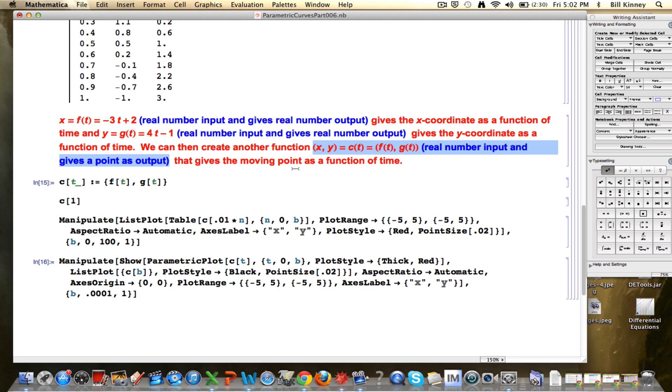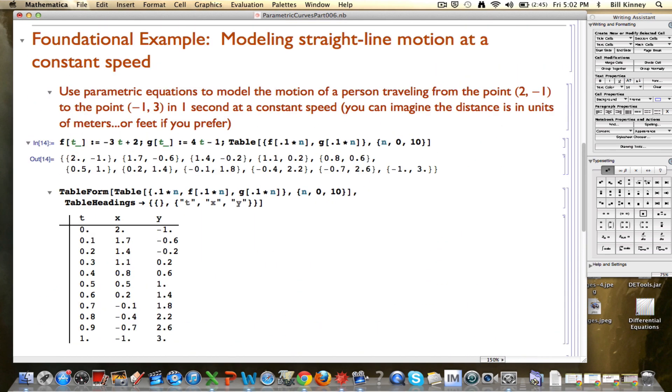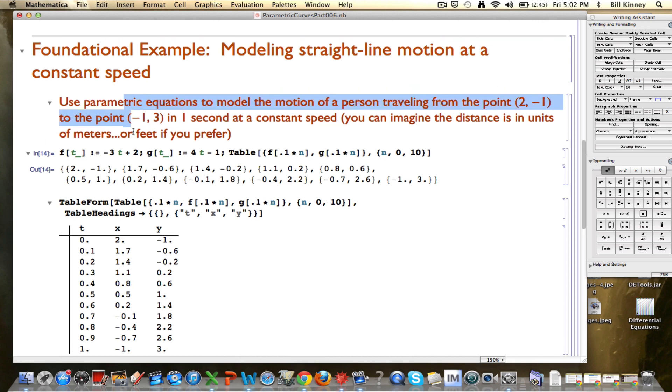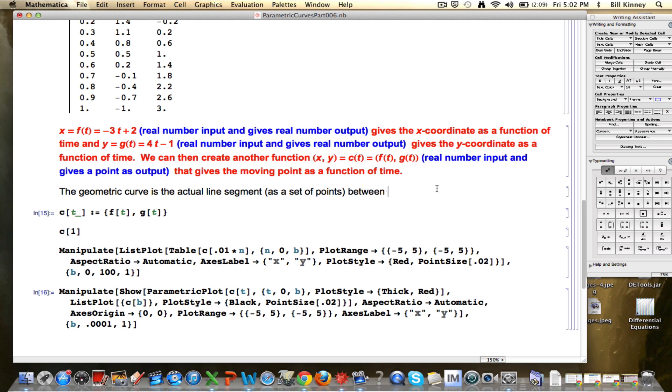So what makes this difference? What is the difference between a geometric curve and a parametric curve? In a nutshell, the geometric curve is, in this case, the actual line segment as a set of points between the starting point and the ending point. Again, the starting point was (2, -1), and the ending point was (-1, 3).